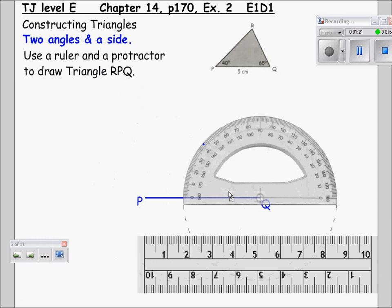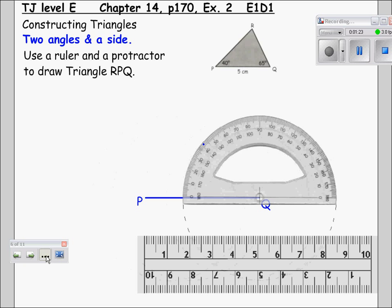Take your protractor and move it to Q. If you like, now might be a good time to draw a line going from P to the angle that you have just measured, like so.